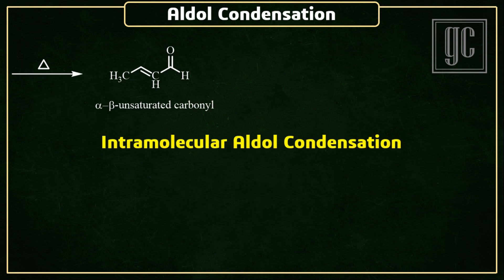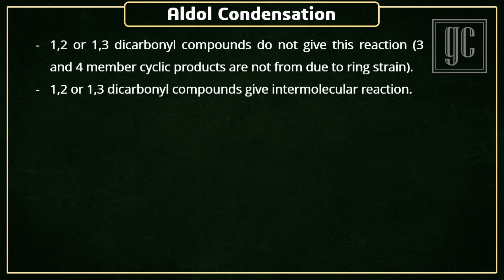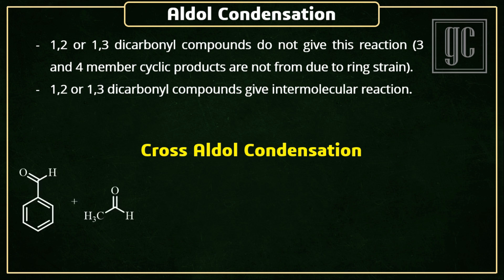Next are the types of aldol condensation. First is intramolecular aldol condensation: when a molecule has two or multiple carbonyl groups and both functional groups react with each other, this is known as intramolecular aldol condensation. Cyclic products are formed in this reaction. Important points: 1,2- or 1,3-dicarbonyl compounds do not give this reaction because cyclic products with fewer than five-member carbon rings are not formed due to ring strain. These compounds give intermolecular reaction instead.